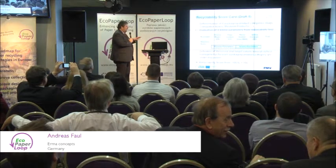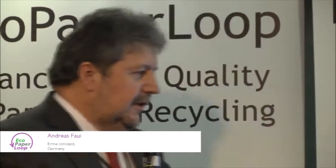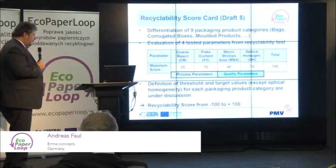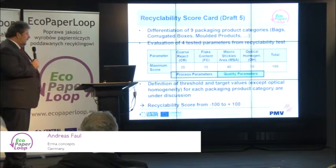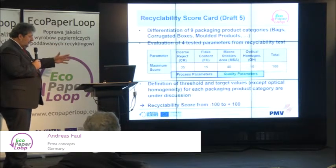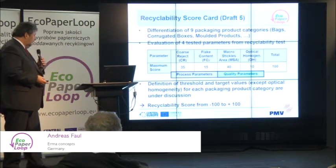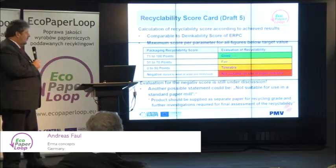Similar to the assessment in de-inking, we took these four parameters — different parameters — allocated a maximum score to each, to come up with a 100% total. We have two quality parameters, which are the macro stickies and the optical homogeneity, and two process parameters, which are the coarse rejects and the flake contents. The idea was derived from the experience with the de-inking scorecard — to have threshold and target values, and then a recyclability score which can range from minus 100 to plus 100, with a table of assessment more or less copied and pasted from the de-inking scorecard.